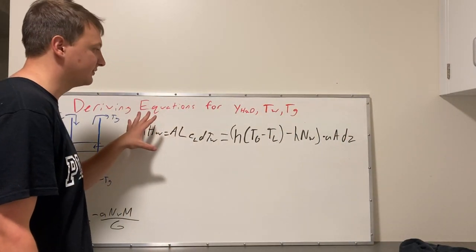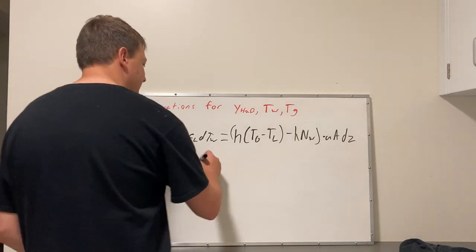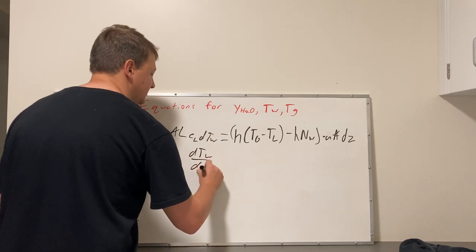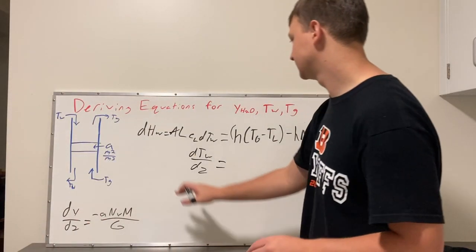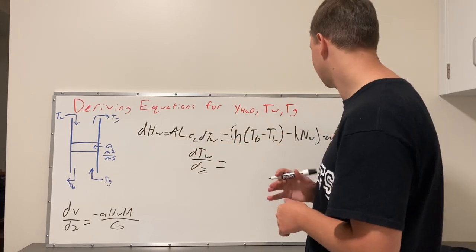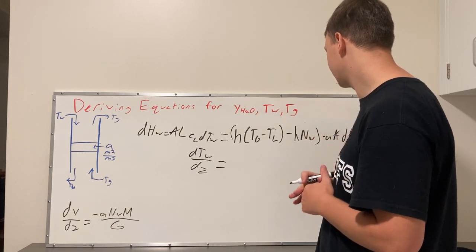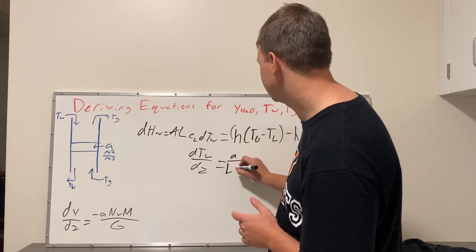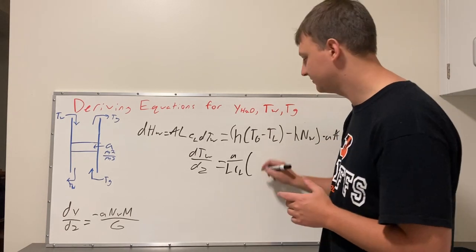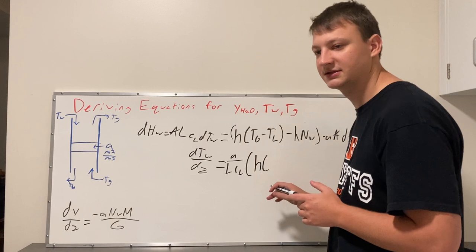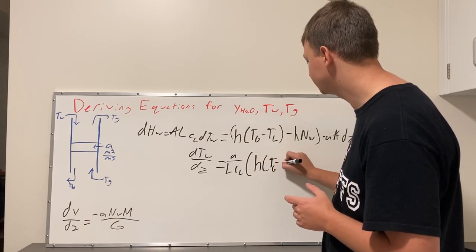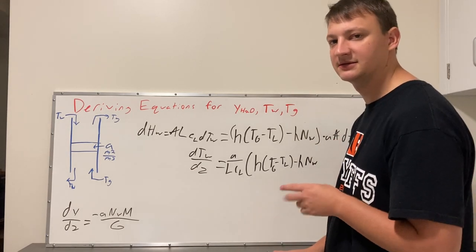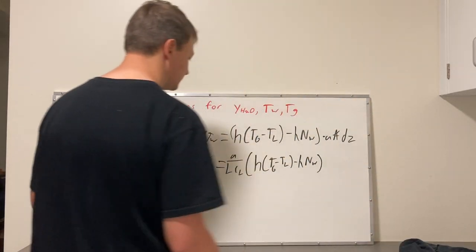To get our change in enthalpy we simplify this equation. First cancel the cross-sectional areas, leaving the change in temperature of the water times the change in position. With the liquid flow rate, heat capacity, and specific volume area on the outside, we plug in the heat transfer coefficient times the quantity: temperature of gas minus temperature of liquid minus heat of evaporation times the mass flux. That gives us our second derived equation.